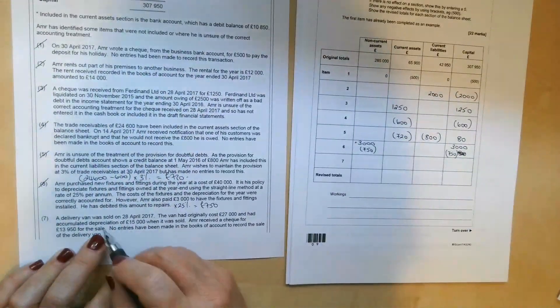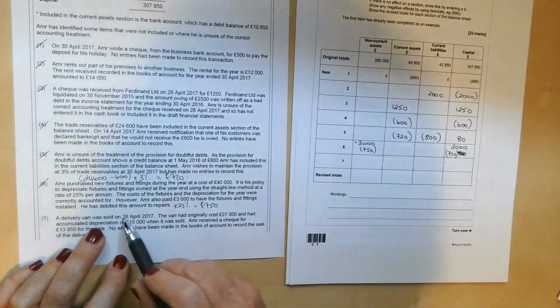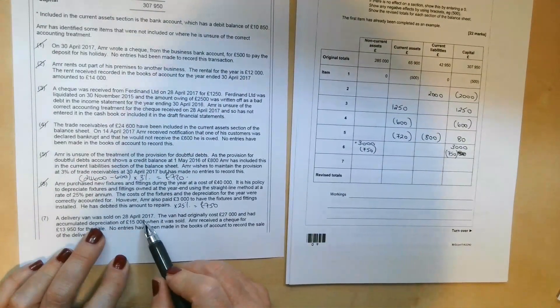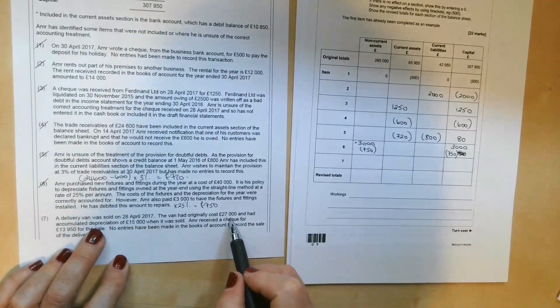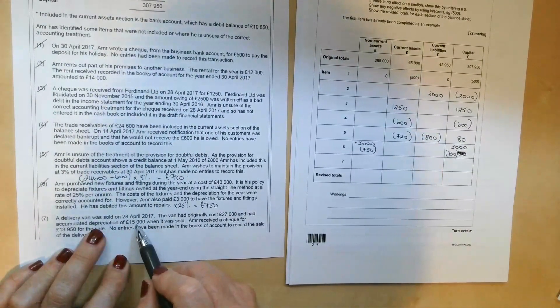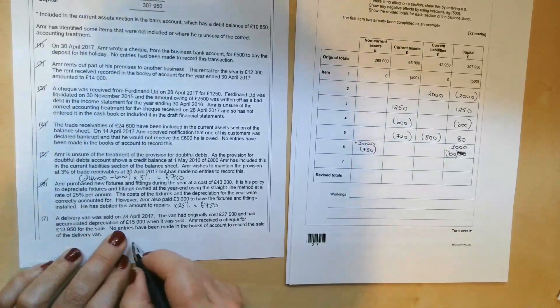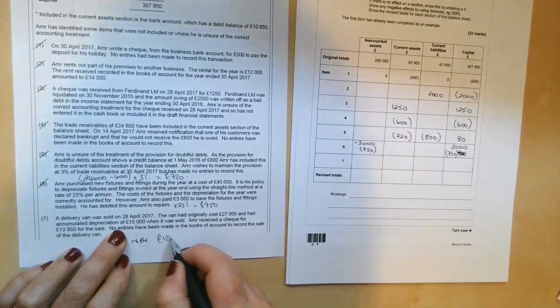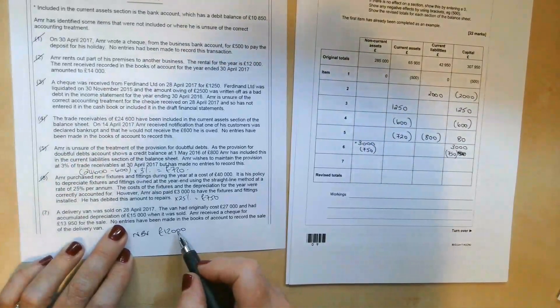Nearly there. The last piece of information we're given is that a delivery van was sold on the 28th of April 2017. It originally cost £27,000 and had accumulated depreciation of £15,000 when it's sold. So that means that the net book value at the date of sale was £12,000.